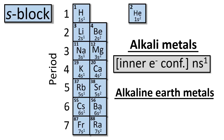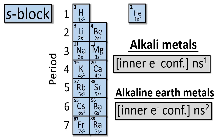For alkaline earth metals, it's the inner electron configuration plus ns². Notice that for all of these elements, the highest energy electrons reside in s-orbitals.